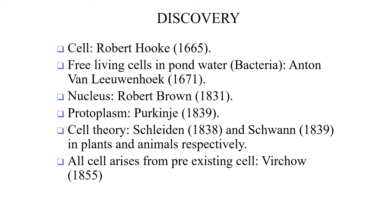The nucleus is present in the center of the cell in animal cells, and towards the periphery — towards one side of the cell wall or cell membrane — in plant cells. The nucleus is the controlling center of the cell, just as a principal controls a school. Protoplasm is a jelly-like material found inside the cell membrane, discovered by Purkinje in the year 1839. All cells arise from pre-existing cells.